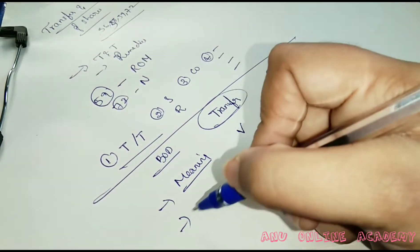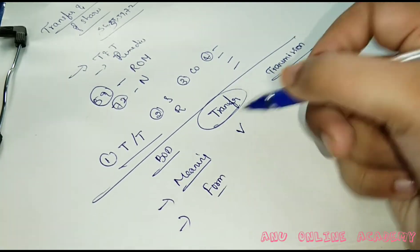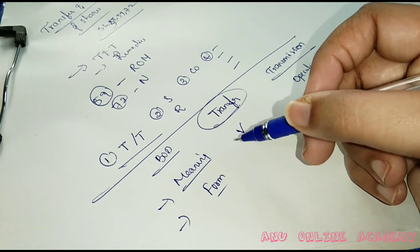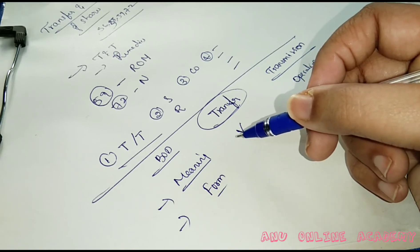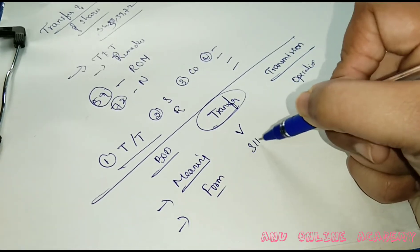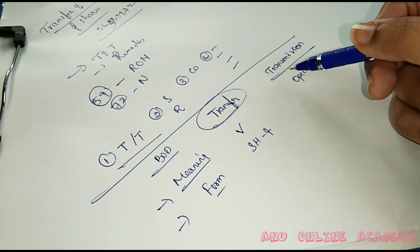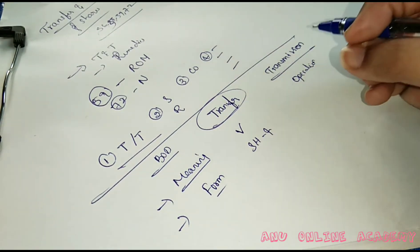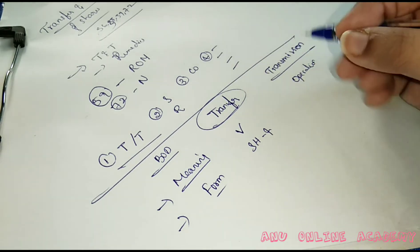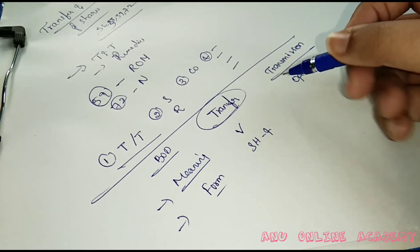Regarding use of form: for transfer of shares, the parties need to use the specific form SH-4. For transmission, no specified form is required — the applicant will apply on plain paper along with the death certificate and nomination proof.